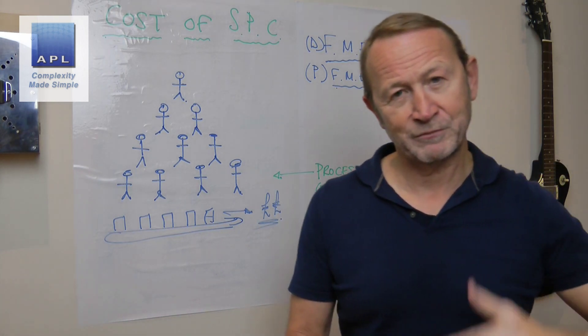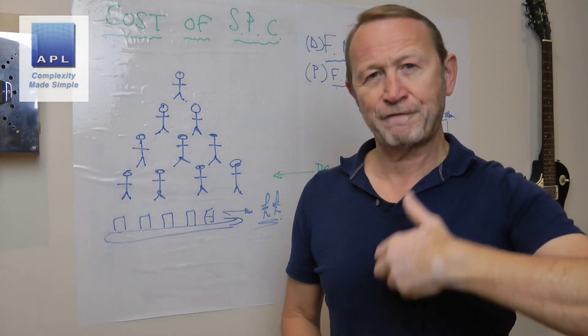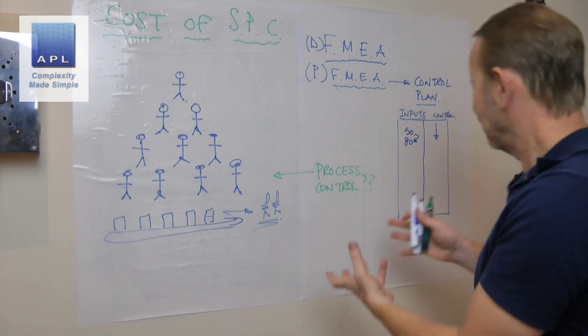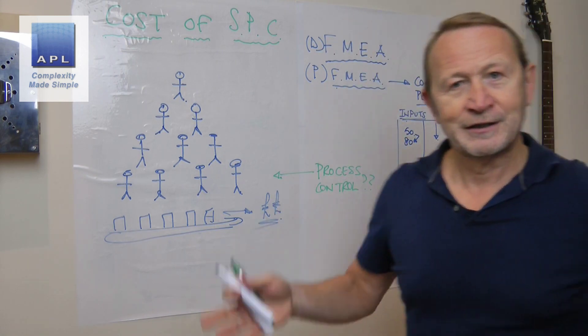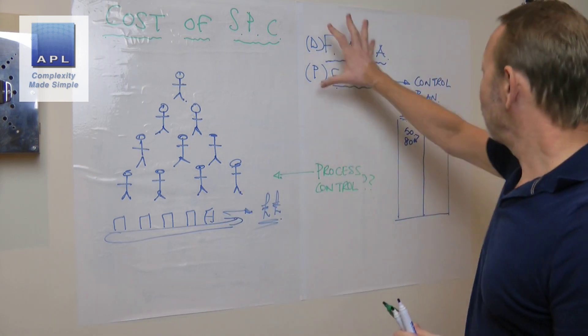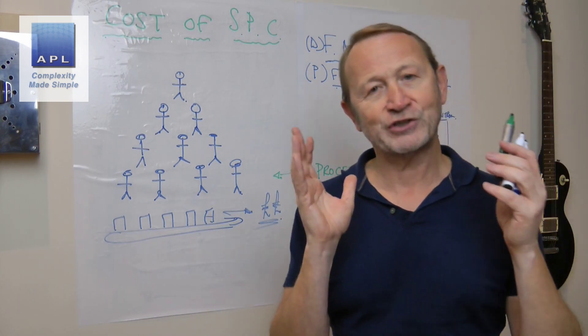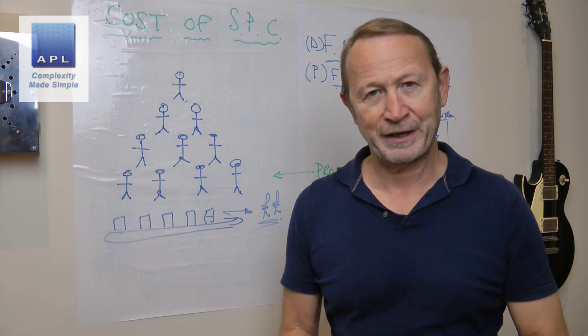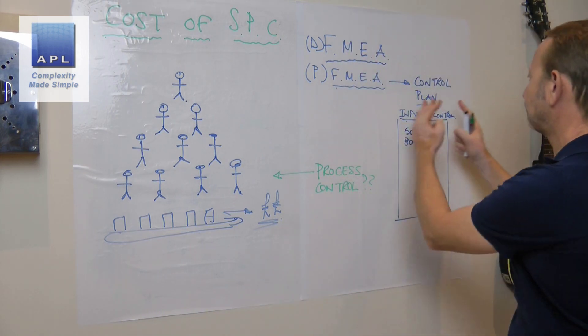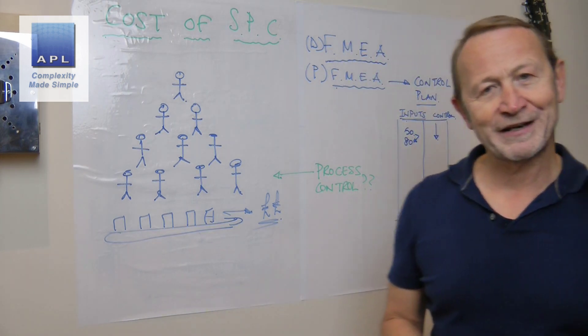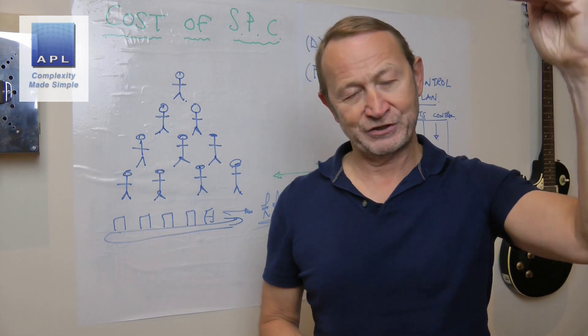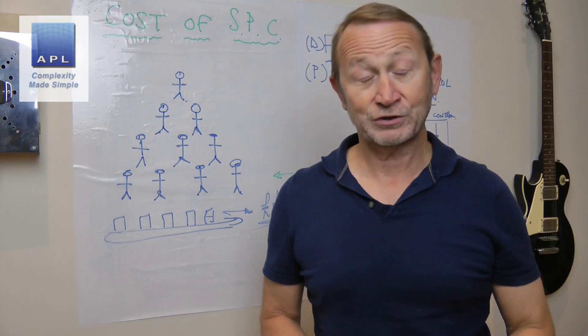But of course, what is a control plan? Well, potentially it's a massive list of process inputs. In fact, it should be a massive list of process inputs—possibly 50, maybe even 80 process inputs. And against each one of them, you will have designed a control.